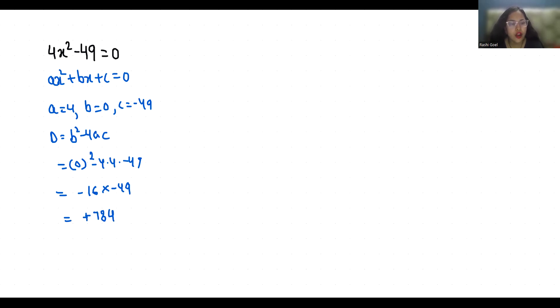Now we are going to find the roots of this equation with the help of the formula minus b plus minus under root b square minus 4ac by 2a. So 0 plus minus, we already calculated b square minus 4ac, by 2 times 4. x equals under root 784 is 28 by 16.